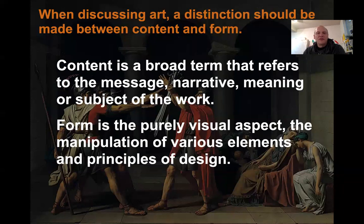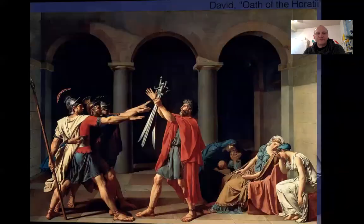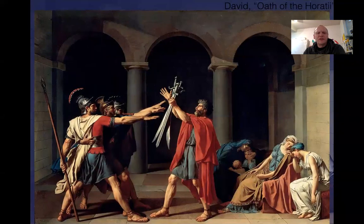When discussing art we need to know the distinction between content and form. Content is what the art is about, and form is how that is presented. The content here might be men preparing to go to battle, but the form is the way in which this is painted — in a very idealistic manner, using paint rather than sculpture.